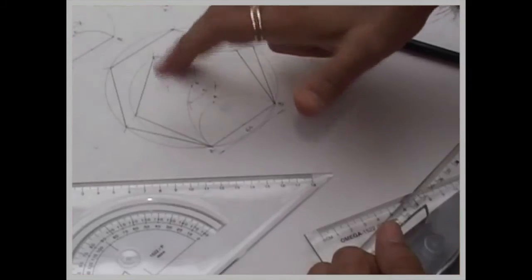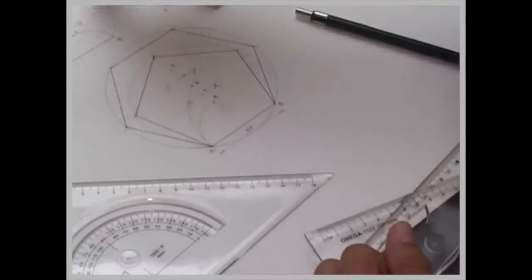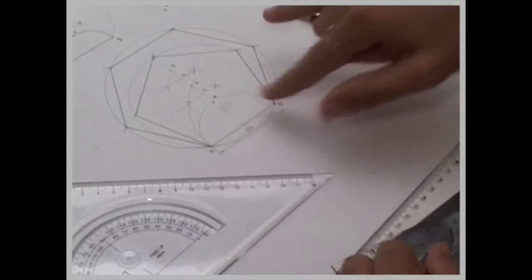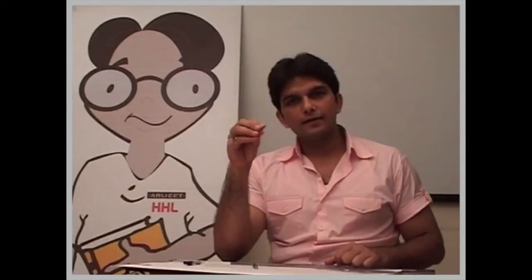Same way, you take 8 to a and draw a circle, and again you take side ab, and cut on both the sides, so you will get octagon. We can draw any polygon with this method, and this method is called a general method.